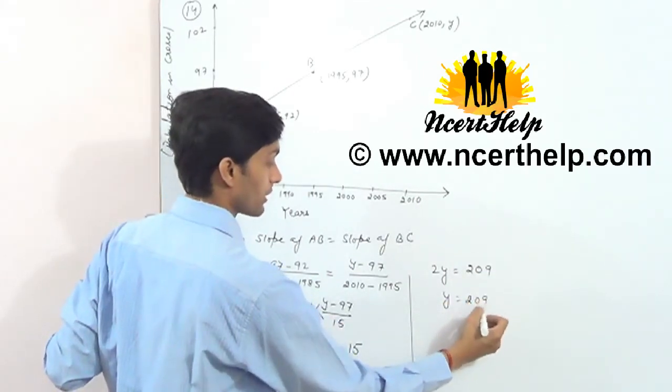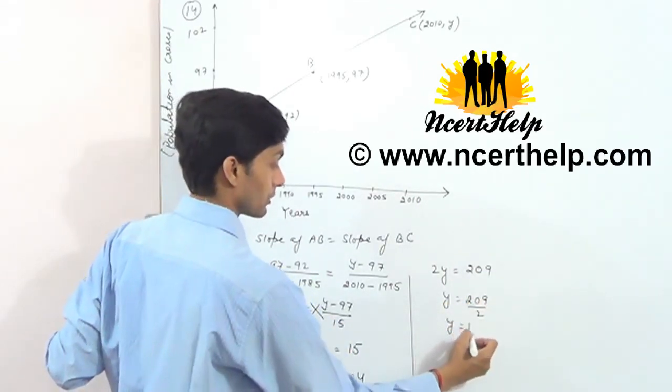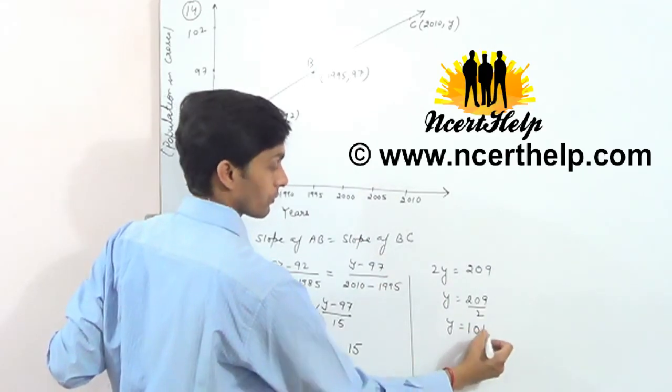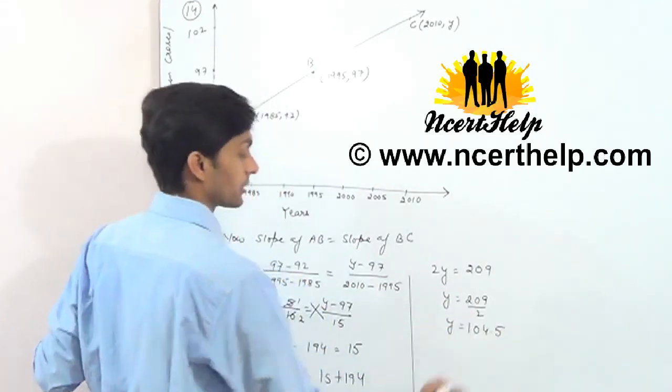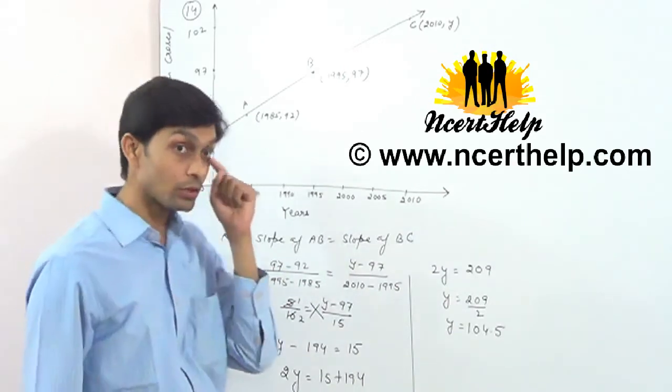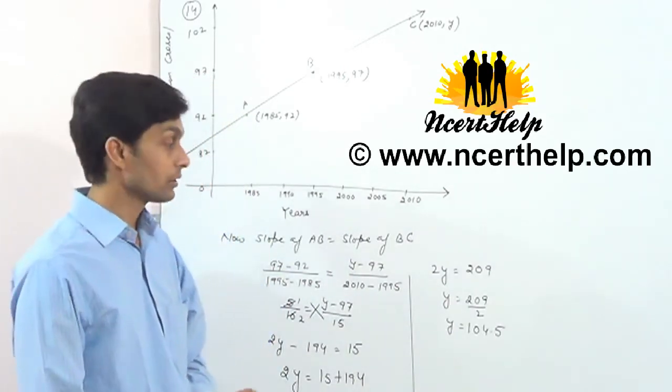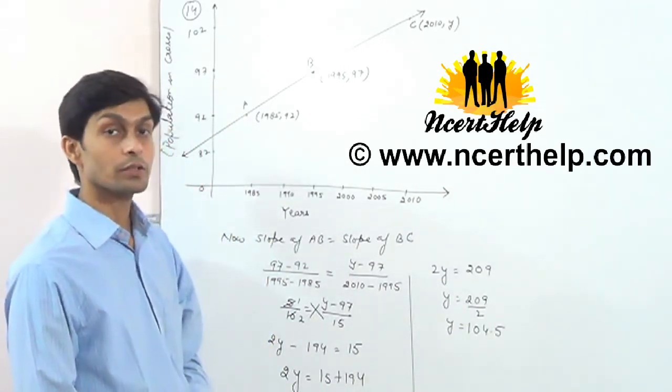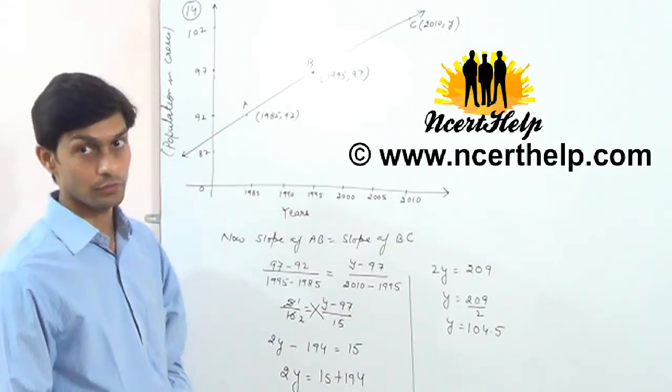2Y is equal to 209 by 2, 104.5. That means in the year 2010, population was 104.5 crores.